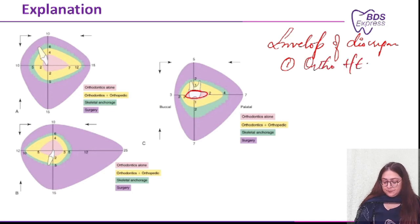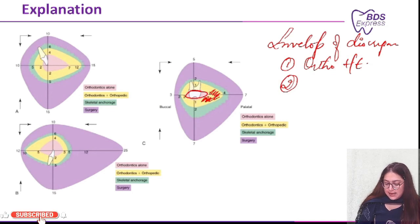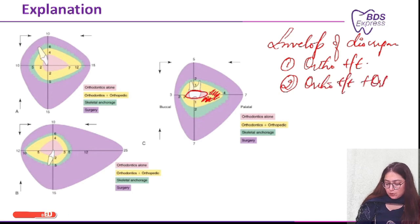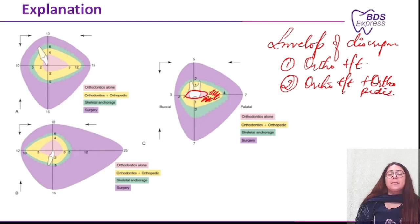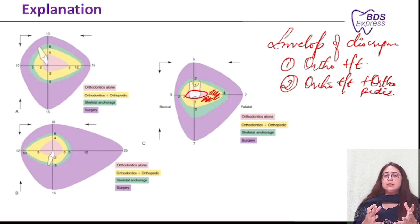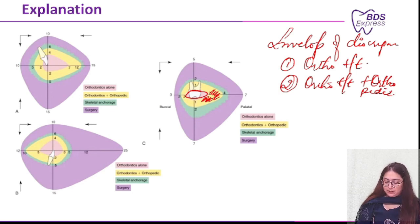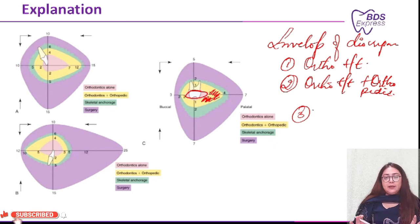The second circle, the yellow one, represents ortho treatment plus orthopedic intervention. Whenever you give headgear, chin cups, or face masks to your patients, that is counted as orthopedic intervention.